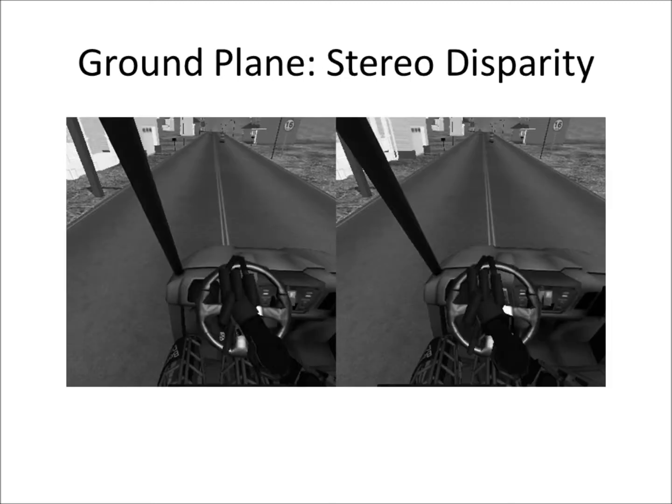Here is an image showing the view from the left and right eyes on the humanoid robot. The separation between the two eyes is only around 6 cm, which is much smaller than the baseline used in typical stereo systems on autonomous vehicles. This small baseline decreases the accuracy of the range estimate. Note how similar the road and buildings look in both images.